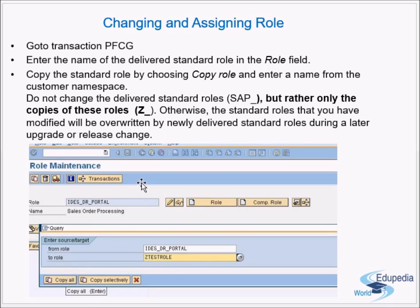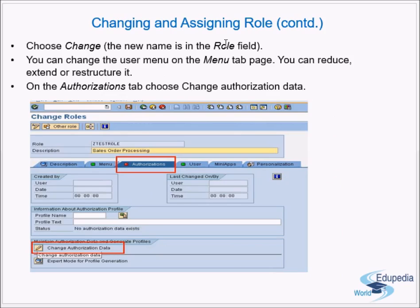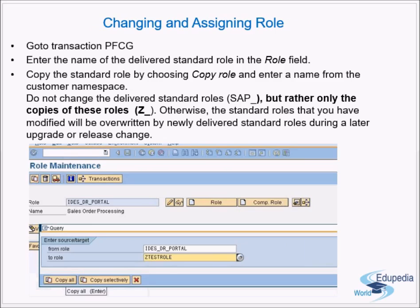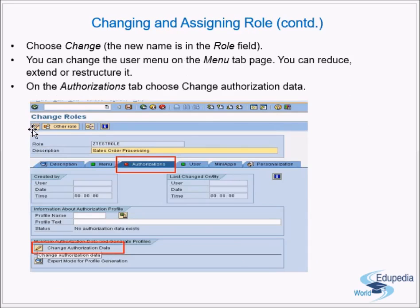Go to the 'Copy All' option. The new role name is now in the role field. Go to 'Change' — you can change the user menu on the menu tab page; you can reduce, exchange, or restructure it. This menu tab defines what the user sees after logging on. The important one is the Authorizations tab, where you choose 'Change Authorization Data'.